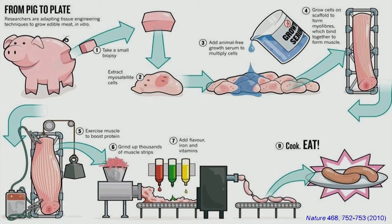An article published in Nature describes researchers adapting tissue engineering techniques to grow edible meat. Take a small biopsy from a pig, grow the cells, add animal-free growth serum to multiply the cells, apply mechanical force to mimic muscle cells, then grind up the muscle strips and add flavor like iron or vitamins. Finally, cook and eat. This shows that tissue engineering is not only for biomedical applications — it can also be used for growing edible meat.